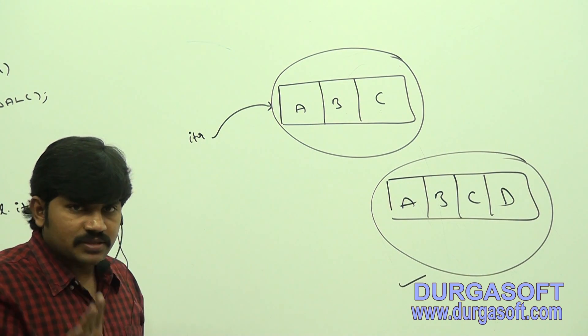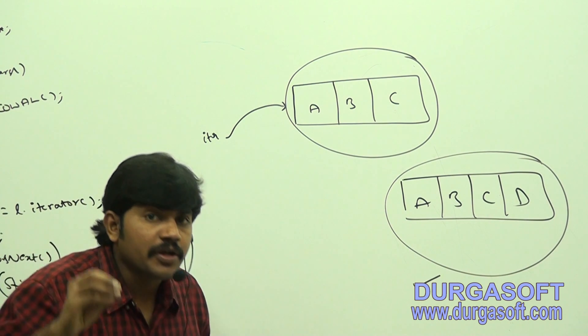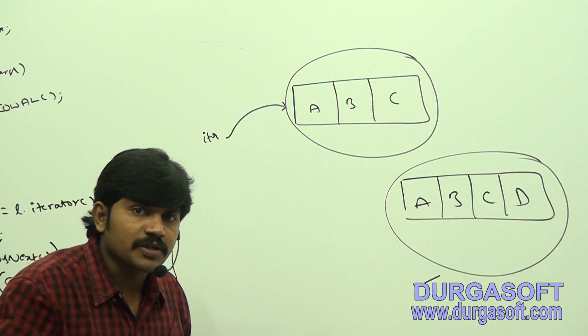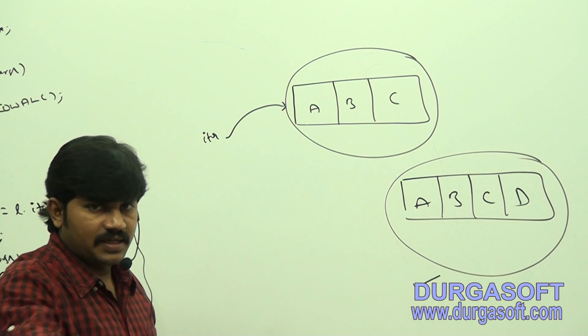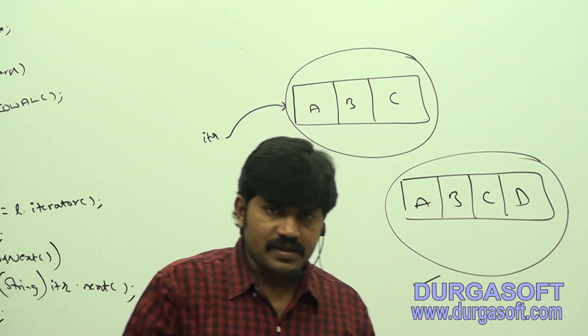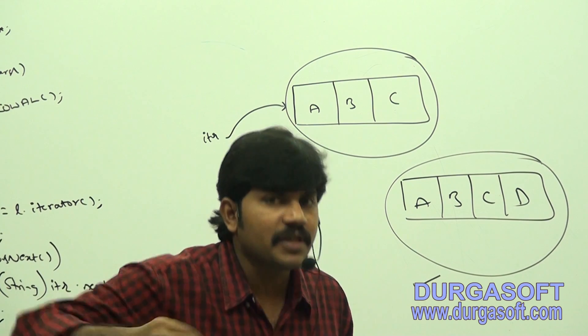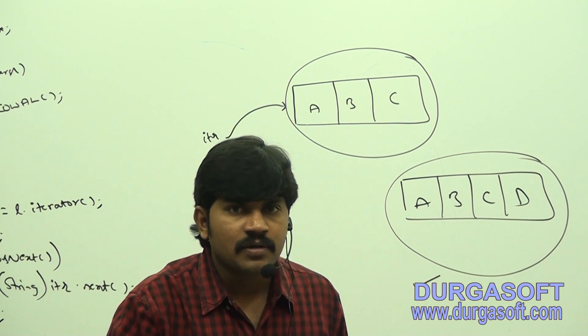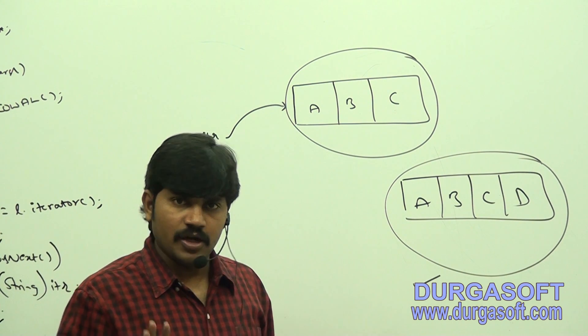Are you getting that? So, that's why, by using this iterator, if I can perform any read operation, read operation, what elements are we going to get? A, B, C, but not D. The conclusion is, after getting iterator, if we perform any update to the CopyOnWriteArrayList, those updates are not available to the iterator.